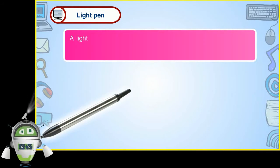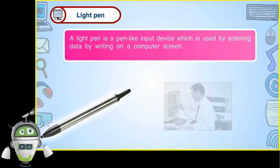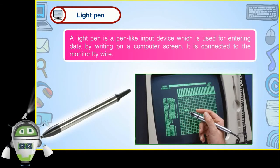Light pen: A light pen is a pen-like input device which is used for entering data by writing on a computer screen. It is connected to the monitor by wire.